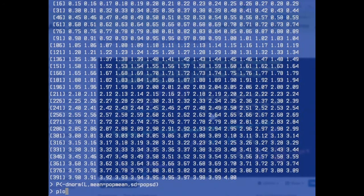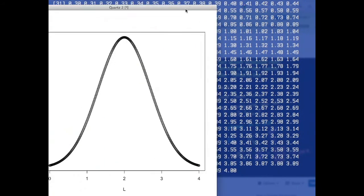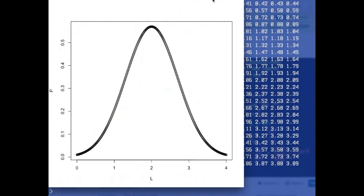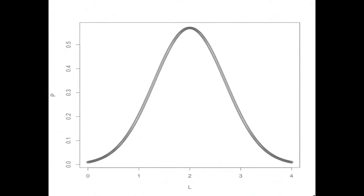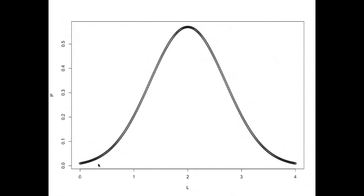Now I can plot it. Plot L and P. Here comes the plot—dots that I can make bigger. It's just dots for every 0.01 liter here.